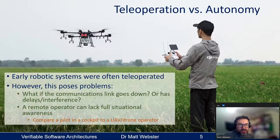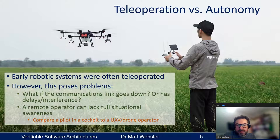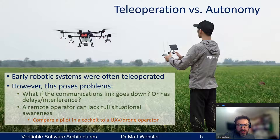What do we mean by teleoperation and autonomy? Early robotic systems were often teleoperated — factory machines either teleoperated or working on a very strict program. Obviously, if you're using teleoperation, you've got problems. What if the communications link goes down? What if there are delays or interference? Or what if there's a malicious user who's trying to jam that radio link? A remote operator can also lack full situational awareness.